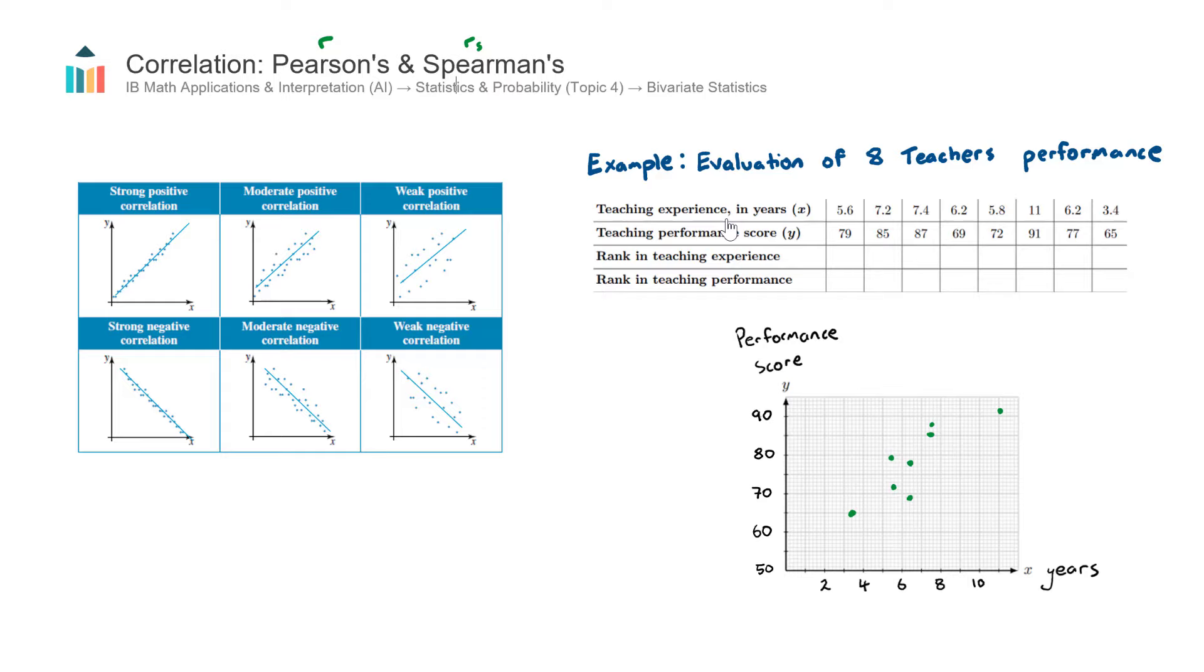And what we did is we overlaid a line of best fit, looks something like this. And the question was, well, there is a trend, but how strong is the trend? How strong is the relationship? It looks like it's kind of strong, but how do we actually measure how strong that relationship is? And here comes this concept of correlation and using values such as R and RS to actually determine the strength of the correlation.